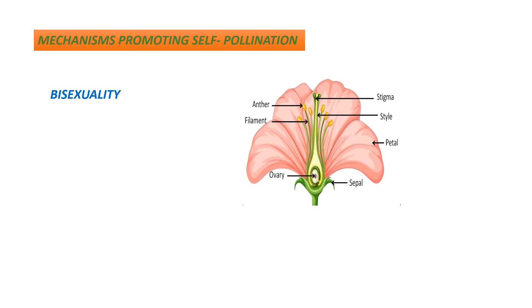This flower has both the male and female reproductive parts in the same flower. Homogamy: it is a condition where the male and the female reproductive parts of the flower mature at the same time. This increases the probability of self pollination to occur. The next mechanism is clistogamy. In clistogamy, the flowers do not open at all, due to which the foreign pollen cannot reach the stigma of the closed flower. This ensures self pollination occurs.